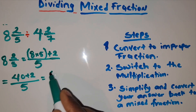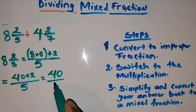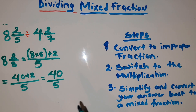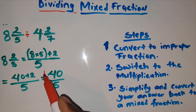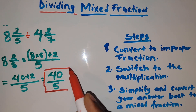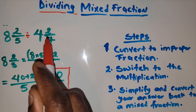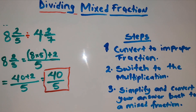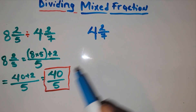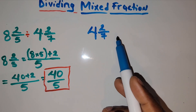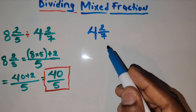So we have 40 plus 2, which gives us 42 over 5. Now this is an improper fraction. How do I know? An improper fraction is one where the numerator is always greater than the denominator. Next, we want to solve the other mixed fraction: 4 and 2 over 7.